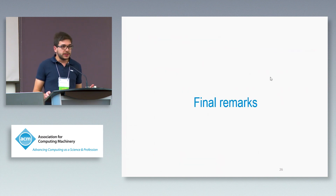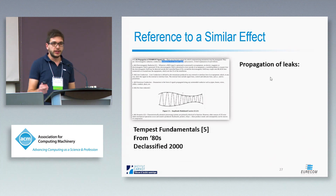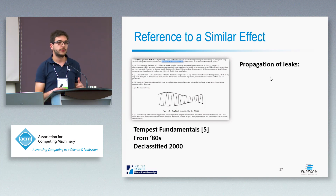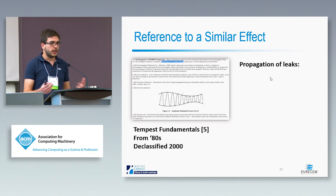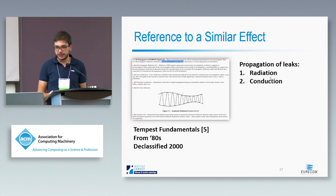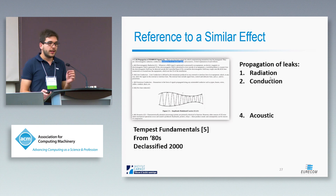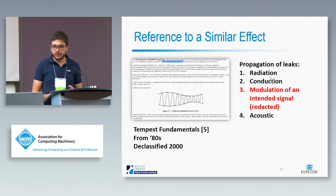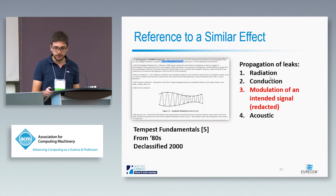We found a reference to something similar. Tempest Fundamentals is a document dating back to the 1980s, declassified in 2000 around the time electromagnetic side channels were discovered in public research. It describes several ways through which sensitive signals can propagate: radiation, conduction, acoustic propagation, and there is a small reference to something that may be similar to screaming channels — modulation of an unintended signal — but this part is totally redacted with no further information.